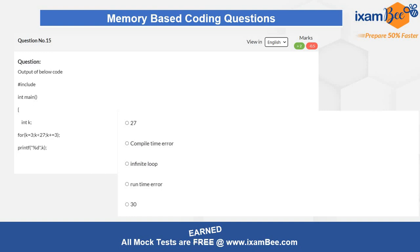Question number 15 is a code-based question where you have to act as a compiler, run the code mentally, and determine the correct output. You need to check whether there is any error and identify if it would be a compile-time or runtime error, or whether a specific output is produced. This may take at least one minute, so pause the video and attempt it properly before answering.